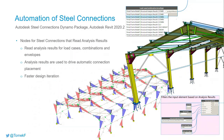This new version introduces the ability to read structural analysis results either from the native Revit analytical model or from data stored in the Results Manager, which can be imported from other applications such as Robot Structural Analysis Professional. This new capability lets you filter steel connections not only by geometrical condition but also by structural analysis results, which is extremely powerful.